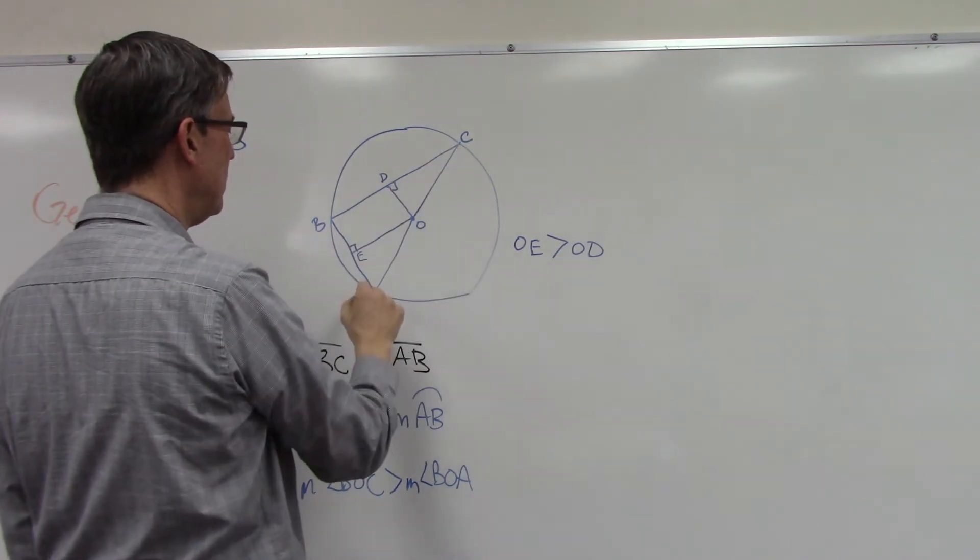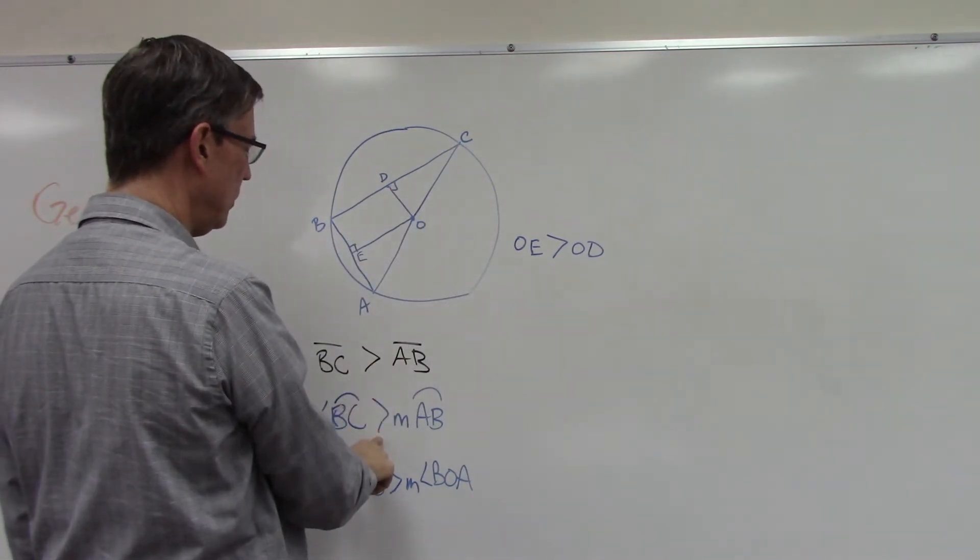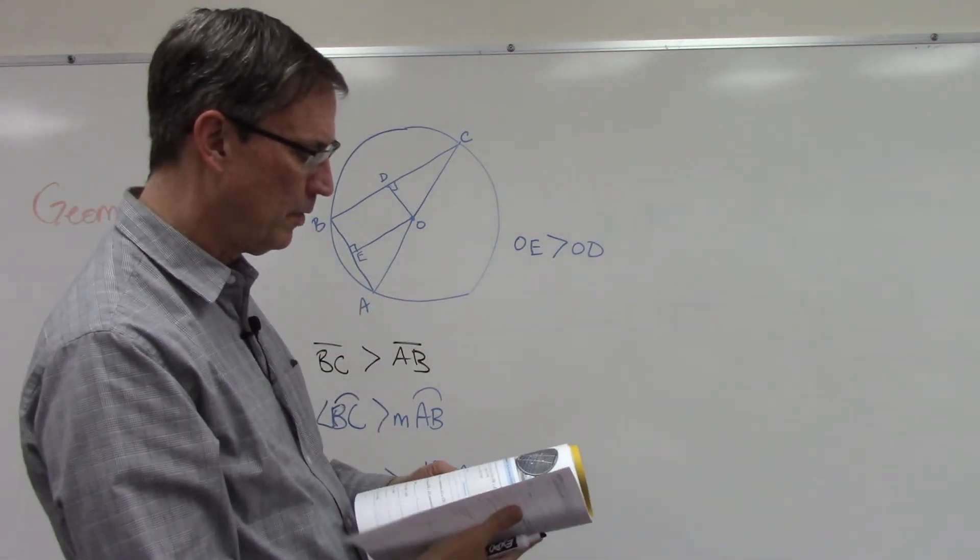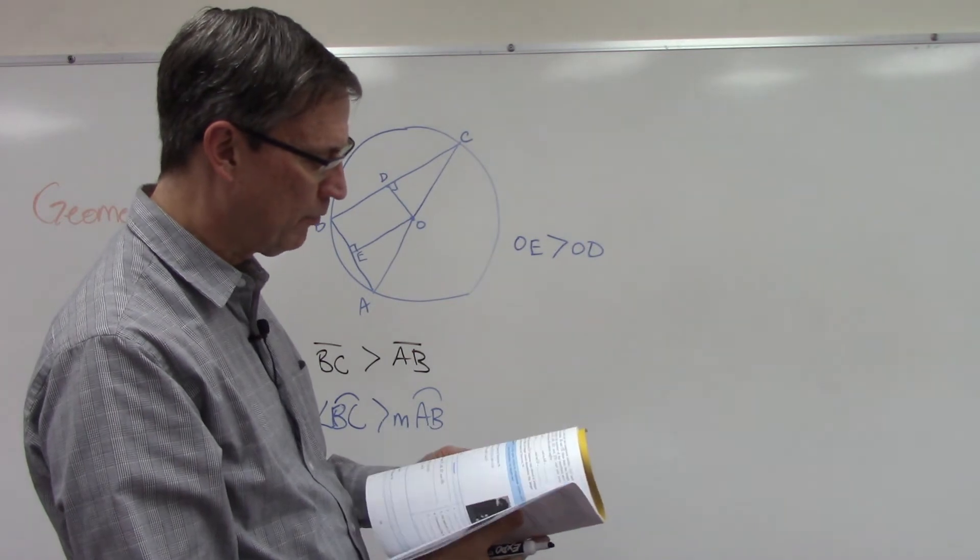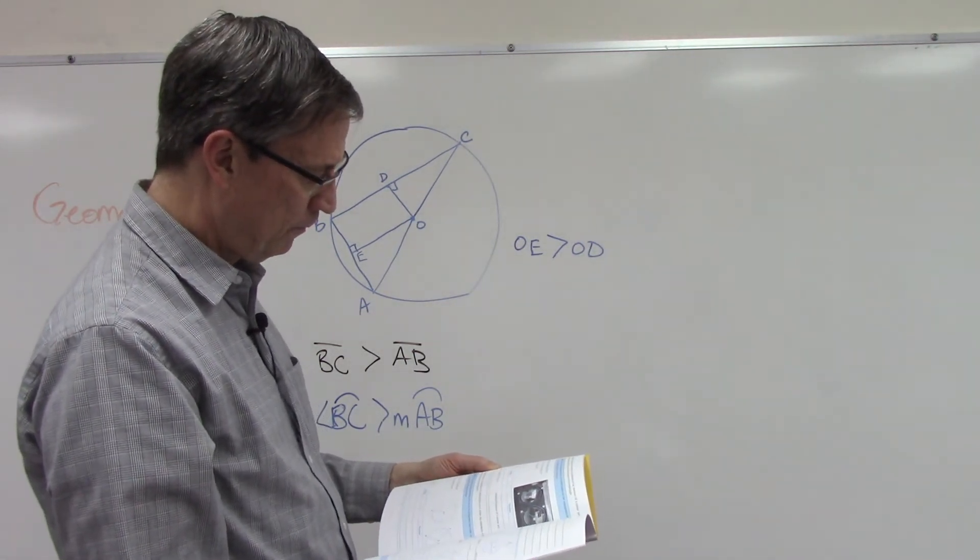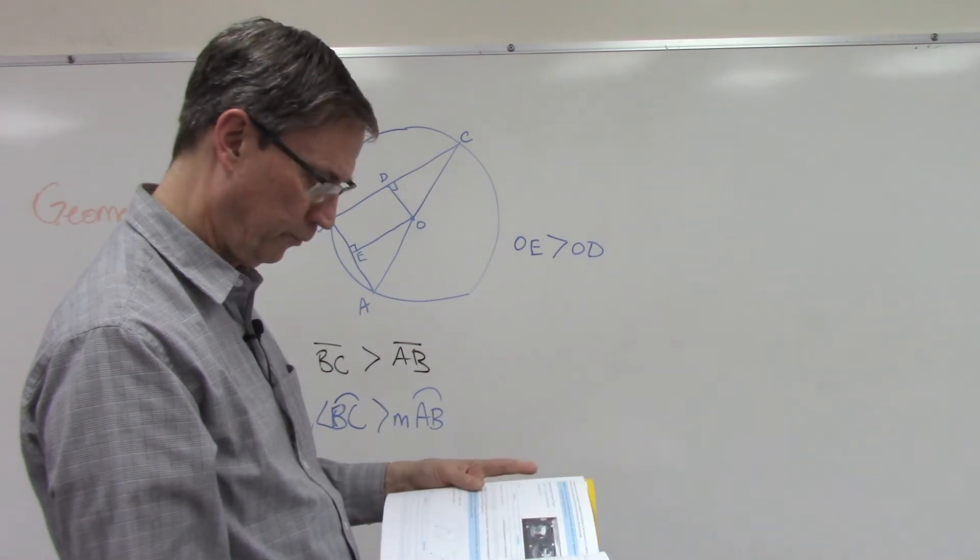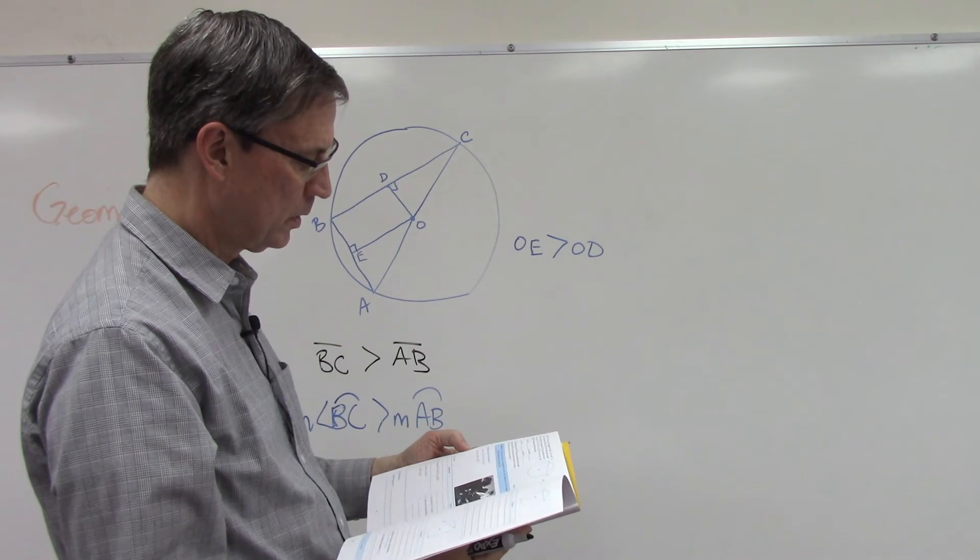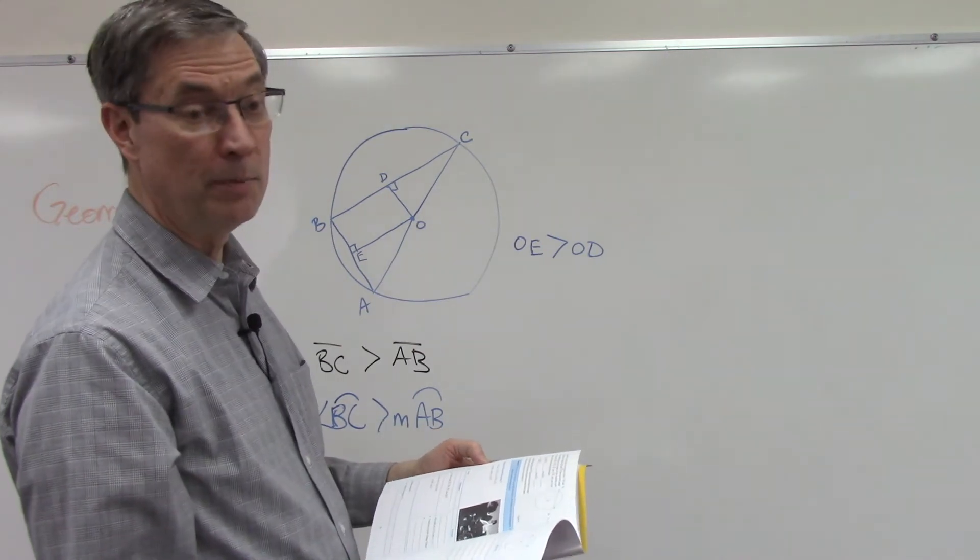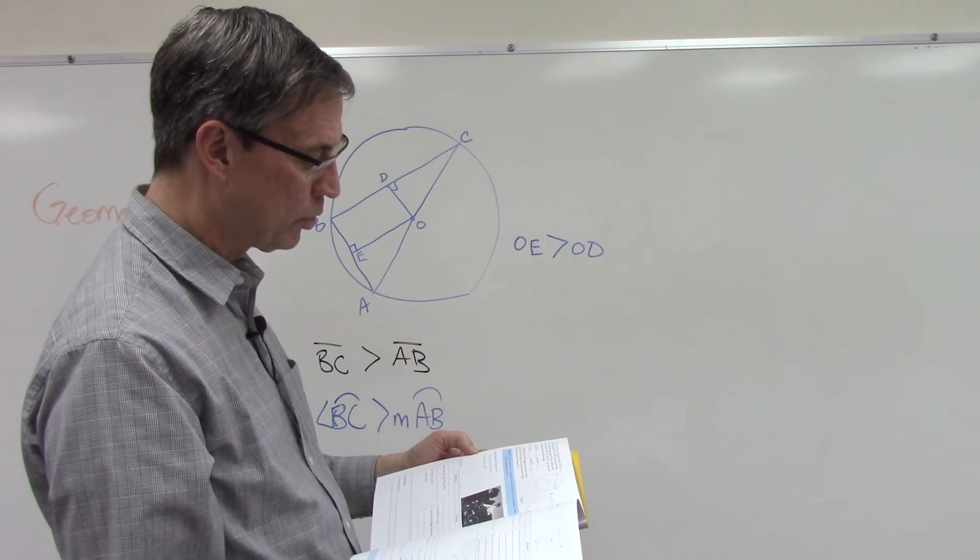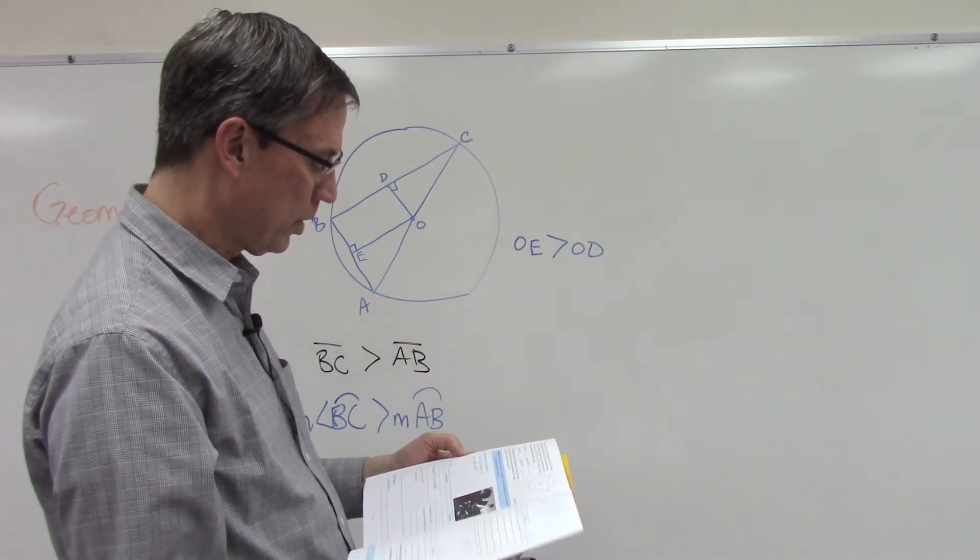The arc intercepted by this chord has to be greater than this arc. If you look back at some of the theorems, let's see if we can find it.